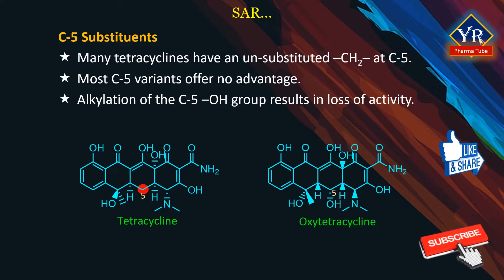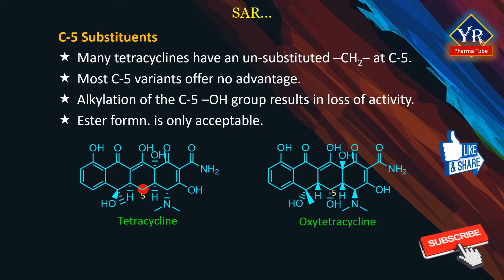Alkylation of the C5 hydroxyl group results in loss of activity. Ester formation is only acceptable if the free oxytetracycline can be liberated in vivo; only small alkyl esters are useful. The C5 formyl ester of oxytetracycline is noteworthy in that absorption is improved, although activity is attributed to the parent C5 hydroxytetracycline. Simple alkyl ester derivatives may retain some weak inherent activity but larger ester derivatives are inactive.